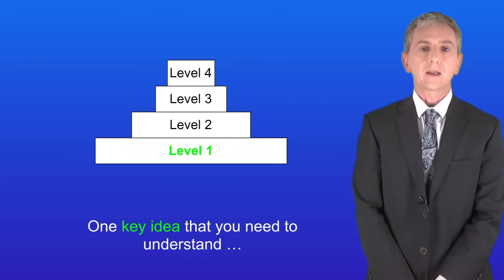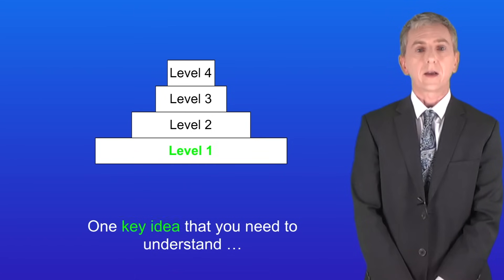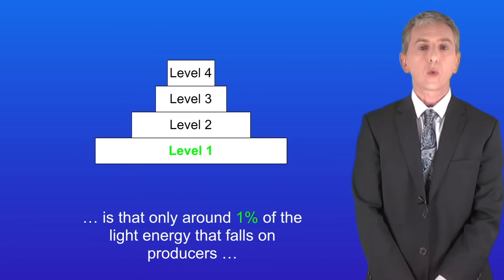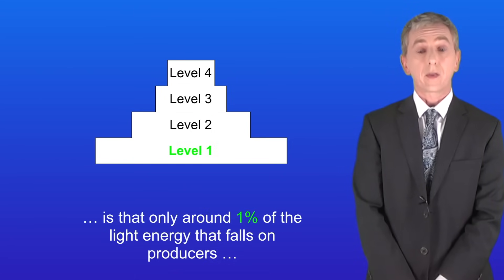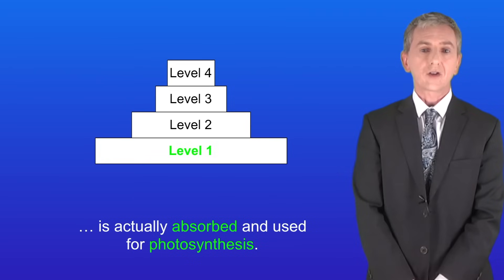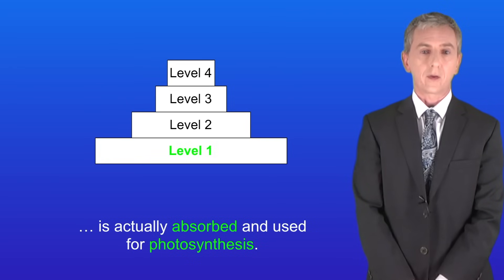One key idea you need to understand is that only around one percent of the light energy that falls on producers is actually absorbed and used for photosynthesis.